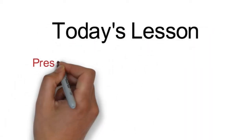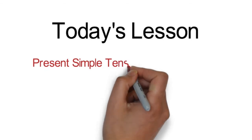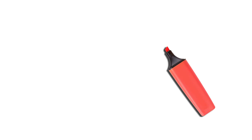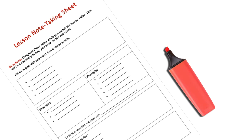Today, we are going to go over the question form of the present simple verb to be. You will need a highlighter and a note-taking sheet for today's lesson.